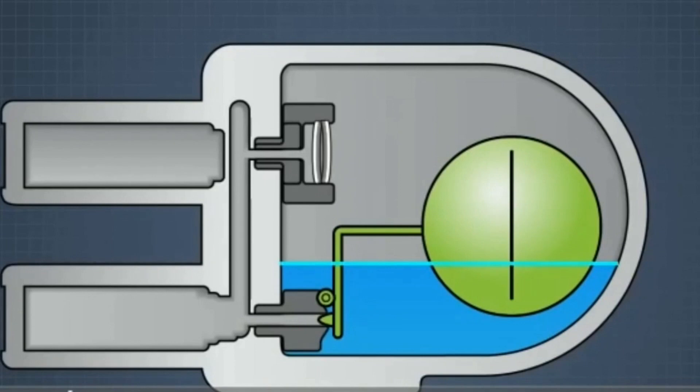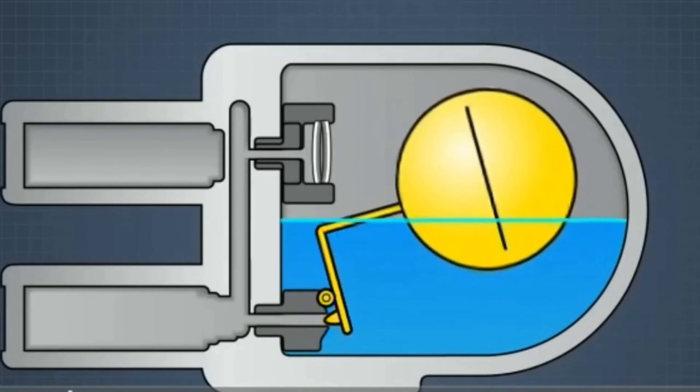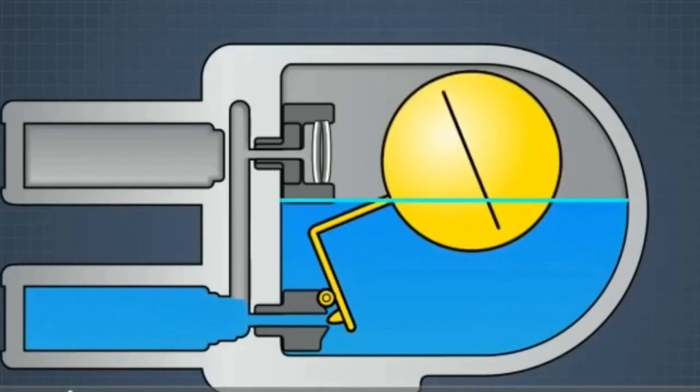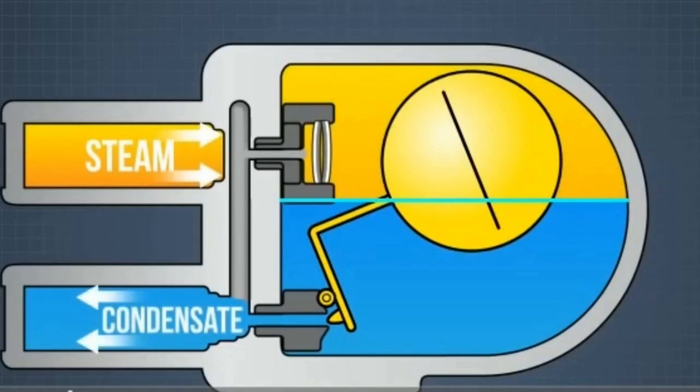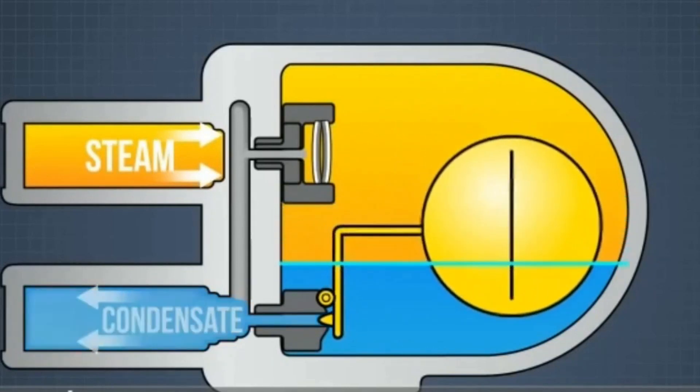As more condensate enters the body, the float rises, pulls the valve plug away and opens the orifice. Any steam entering the body must force condensate out before it can escape, but as the condensate level falls, the orifice closes and the steam is contained.